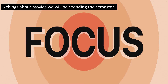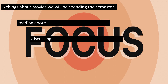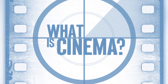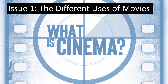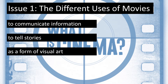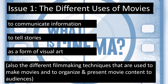These are the things we will be spending the entire semester reading about, discussing, and writing about, as well as what we will be learning through watching and interpreting movies in class. Issue one examined in this course is the different uses of movies. In Film 116, we will be looking at the different ways that filmmakers use movies to either communicate information, tell stories, or create visual art. As part of that, we will also be learning about the different filmmaking techniques that are used to make movies, and to organize and present movie content to audiences.